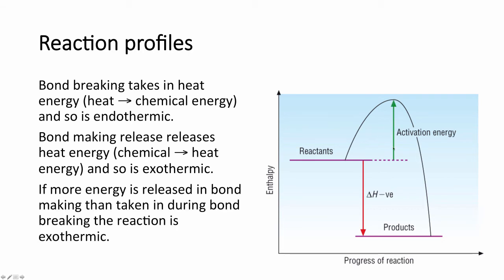If more energy is released than is put in, then the overall reaction is exothermic. The enthalpy, represented by H, change, represented by delta, would be negative. That is, the chemical energy has decreased because it has been transferred to the surroundings as heat.